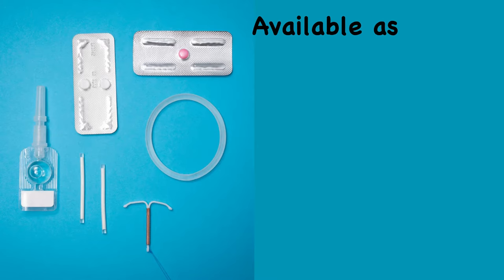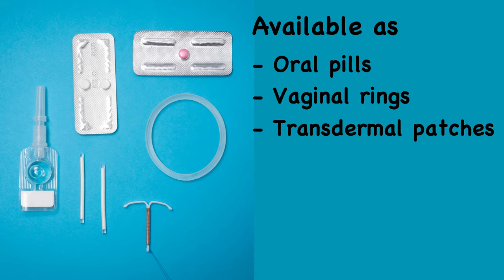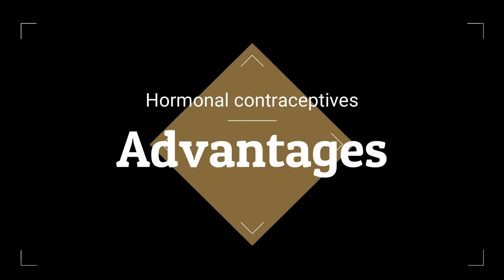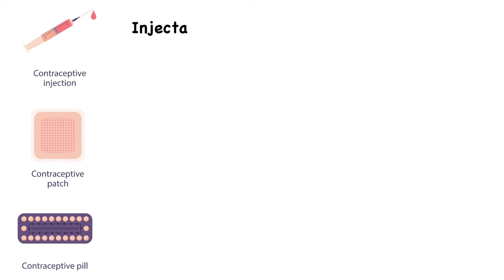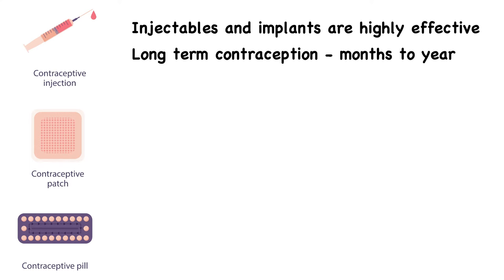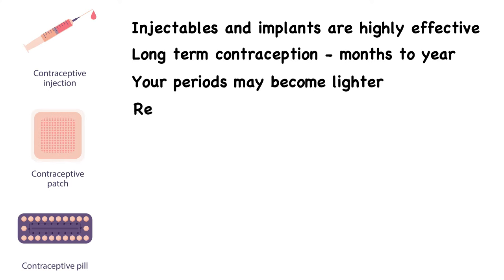Hormonal contraceptives are available as oral pills, vaginal rings, transdermal patches, intrauterine devices, subdermal implants, and injectables. The injectables and implants are highly effective birth control methods and provide long-term contraception from several months to years. They can help with your period, as periods may become lighter, and they also reduce cramping.